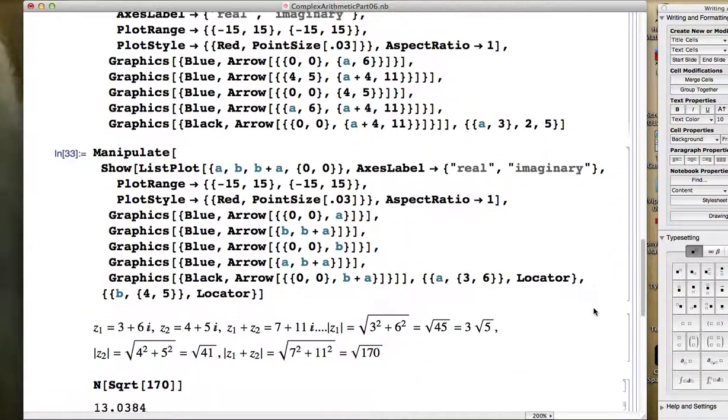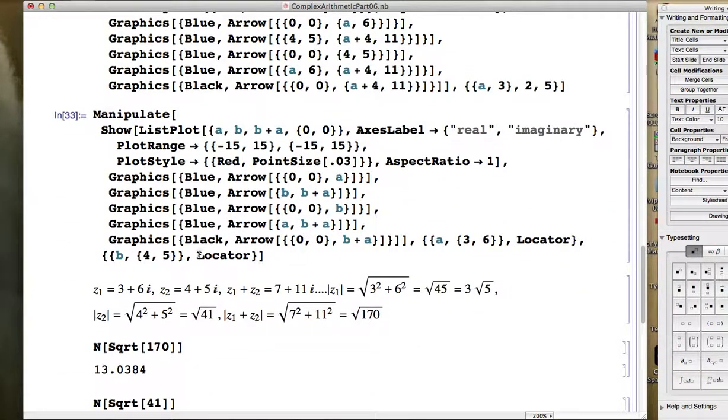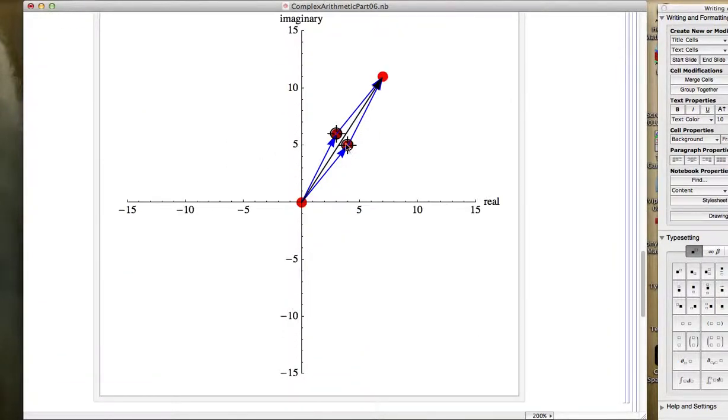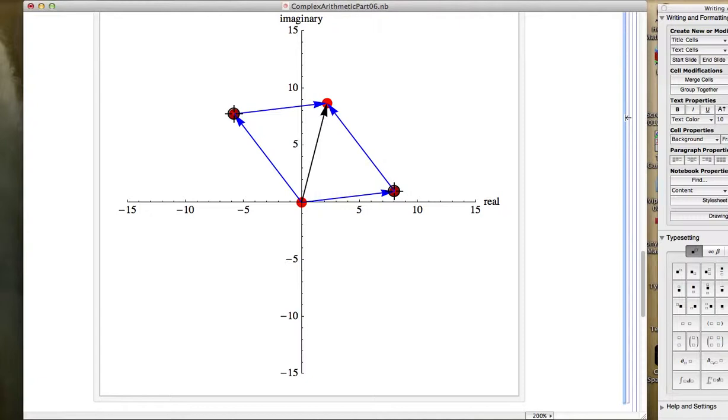In the last video, we focused on using the locator command in Mathematica within a manipulate to create cursors that can be moved around instead of sliders to animate your picture. In this case, illustrating the parallelogram law for complex number addition, where we can move either complex number around.